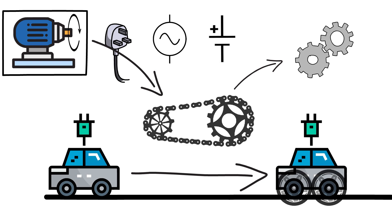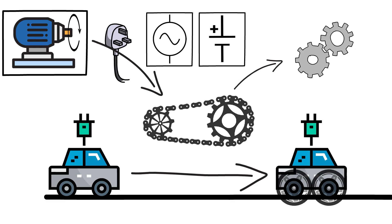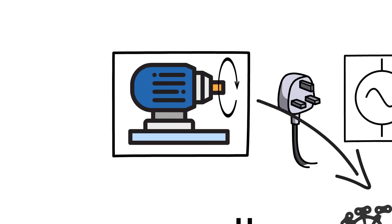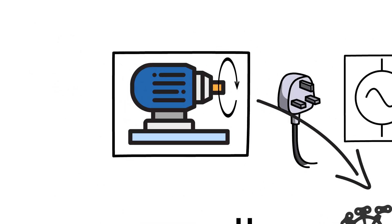Motors work on either AC or DC power supply, and there are several advantages and types of both AC and DC motors which make a significant difference in selecting the right motor for any application. We need to compare these AC and DC motors, but we'll skip that for now and cover those topics in future sessions.